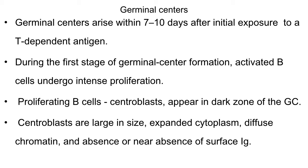When a thymus-dependent antigen activates the T cell, around 7 to 10 days are required for the formation of secondary lymphoid follicles with germinal centers. In the germinal centers, in the first stage, the B cells undergo intense or rapid proliferation and such cells are the centroblasts. These centroblasts are present in the dark zone of the germinal center.